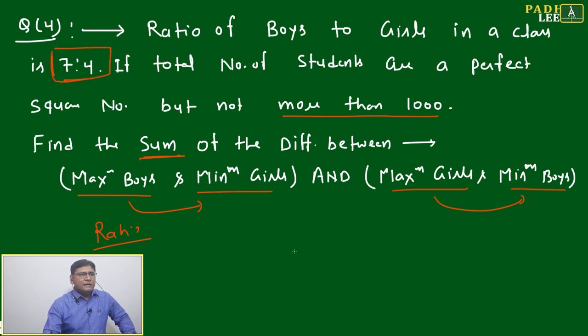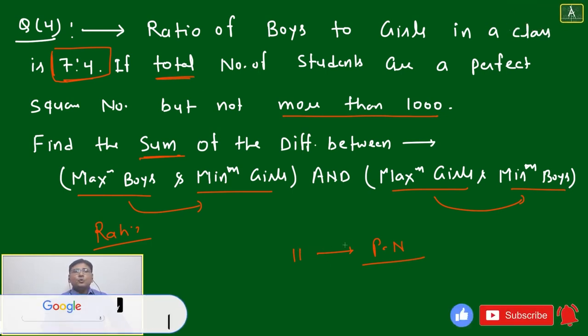7:4, if you are adding it is becoming 11. What is 11? It is a prime number. This is one of the clue because here you have to find total number means you have to add this 7 plus 4. This 11 is giving the clue and that will give you the limitation of option choices.